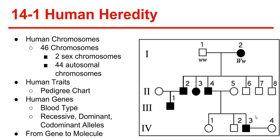Two of the 46 chromosomes are known as sex chromosomes, and they determine the individual's sex. Females have two X chromosomes, while males have one X and one Y chromosome. The other 44 chromosomes are known as autosomal chromosomes, or autosomes.